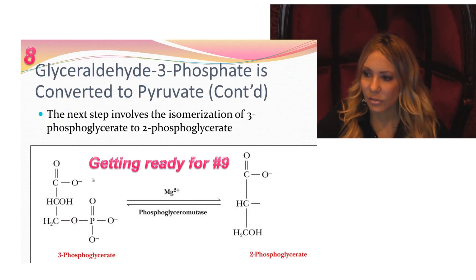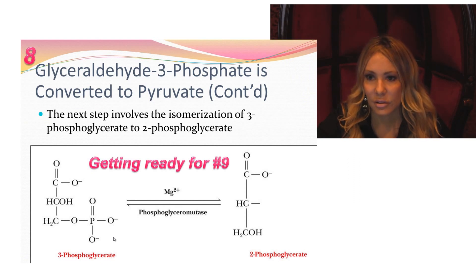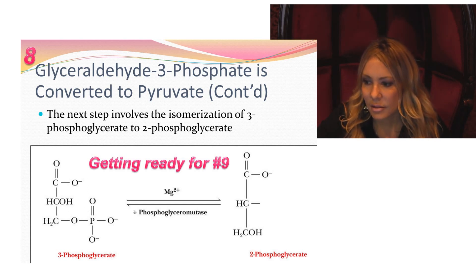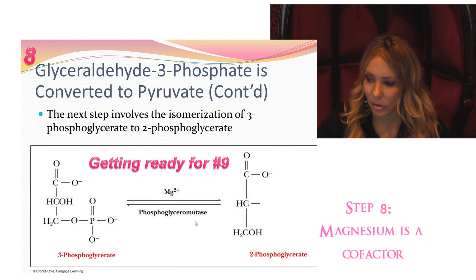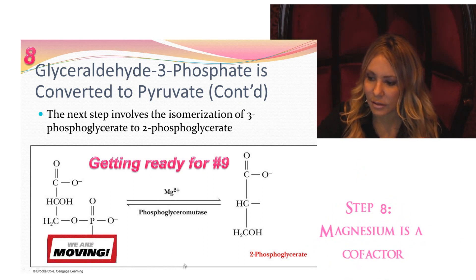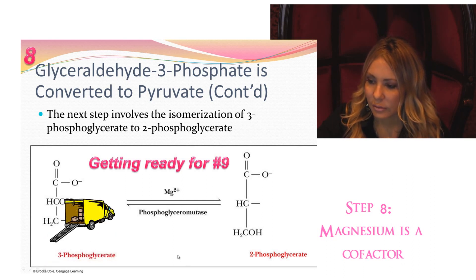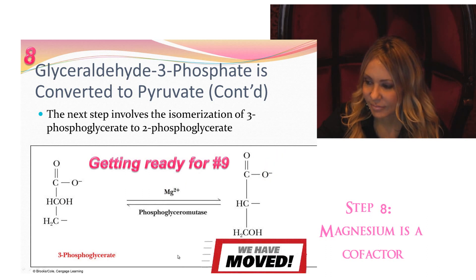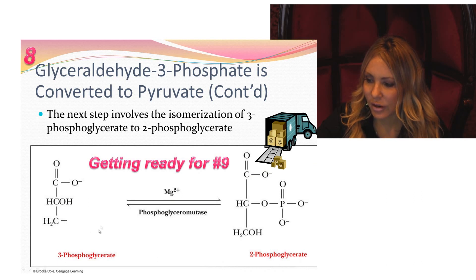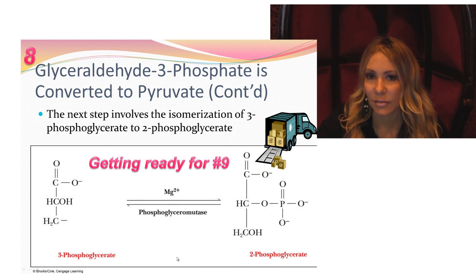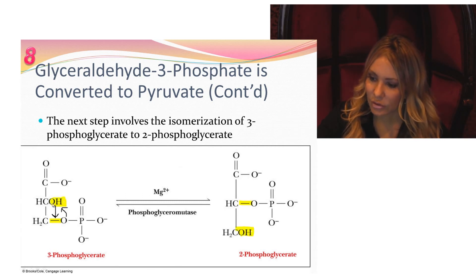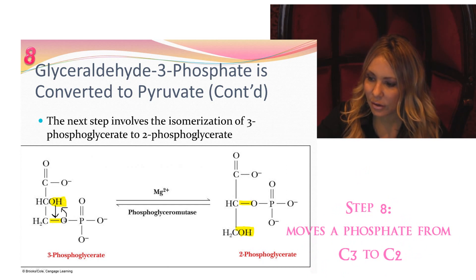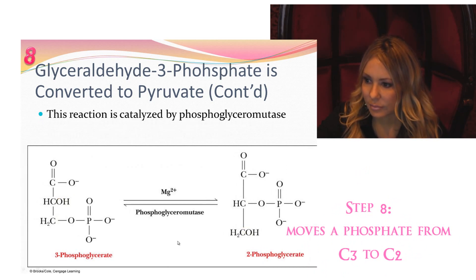Step eight is going to be an isomerization of 3-phosphoglycerate to 2-phosphoglycerate. We're simply going to move the phosphate group from C3 to C2. It's a prep step, catalyzed by phosphoglyceromutase — it's a mutase because it's moving a functional group within its own molecule. Magnesium is participating as a cofactor. We have moved the phosphate from C3 to C2; the hydroxyl moves down, the phosphate moves up. Now we have 2-phosphoglycerate. A pretty simple reaction.